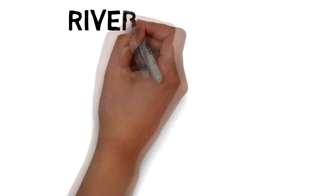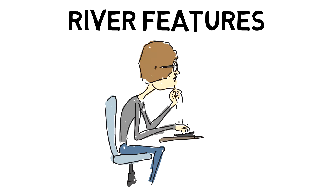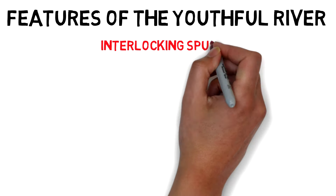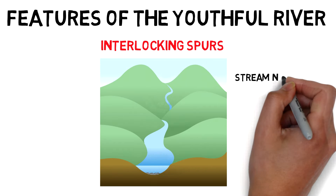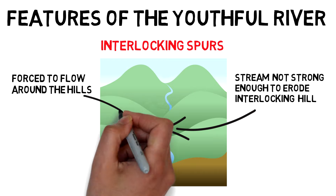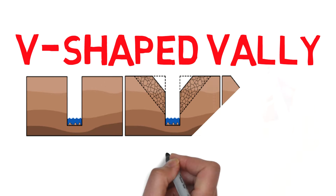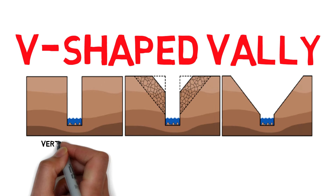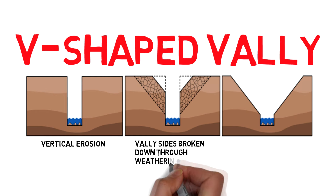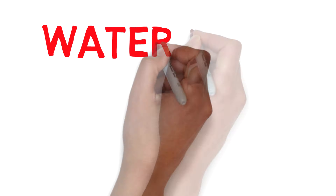Now we're going to move on to the various features of the river — this is the part most likely to come up in the exam, so pay close attention. Starting with features of the youthful river: interlocking spurs occur where the stream is not strong enough to erode the interlocking hill, so it is forced to flow around the hills. Next up, we have a V-shaped valley, which forms when the river erodes a valley in a process called vertical erosion. The valley sides are broken down through weathering, and this weathered material falls into the river over time, creating steep valley sides.